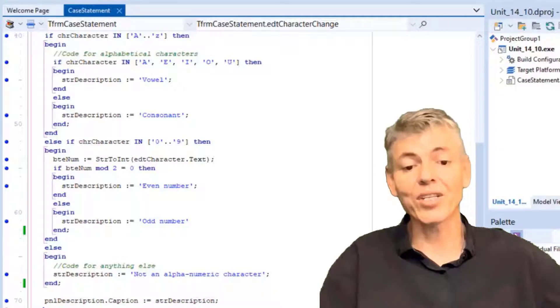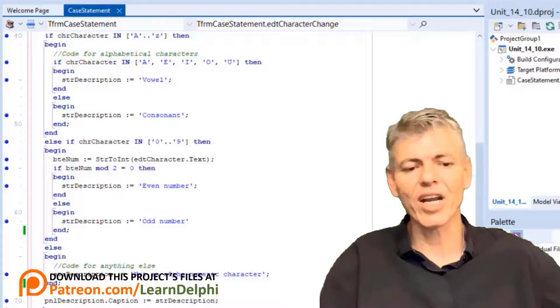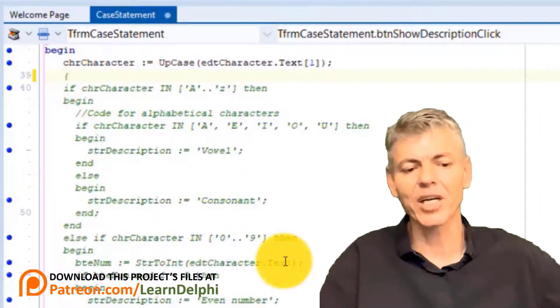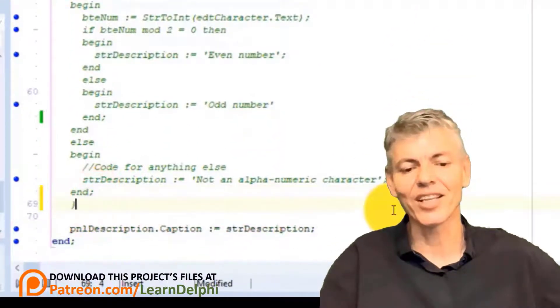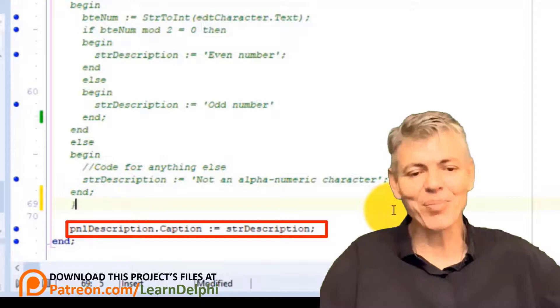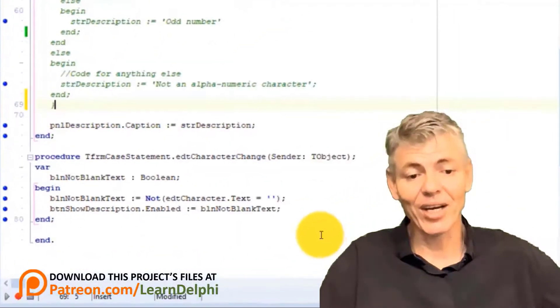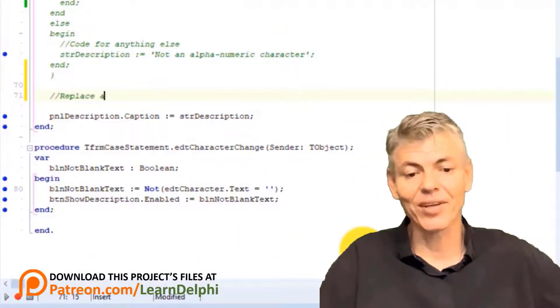We will replace this whole if structure with a case statement that does exactly the same. We will do it step by step to make it easy to follow and understand. You will keep the code we will replace so you will have an example of both techniques. So we will just make it a comment so the compiler can ignore it. Put your cursor above the outer if statement and type a curly brace. Now go under the end statement and type a closing brace. We still need this statement for the output. Make a new line and type this comment: Replace above if statement with a case statement.